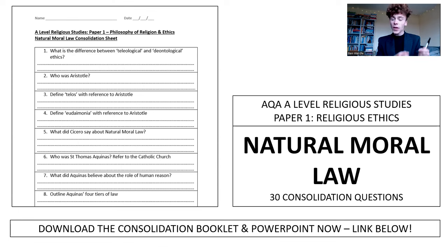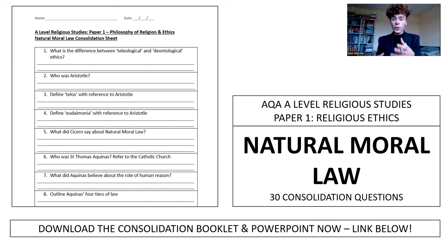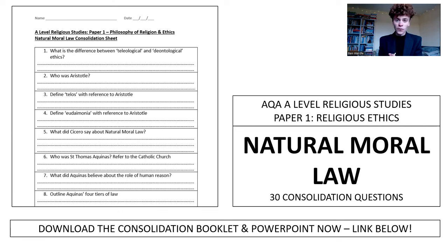We'll be starting with those ancient Greek and Stoic influences, looking at the four tiers of law, the five primary precepts, the secondary precepts, and of course the AO2 evaluation points — what different scholars have said about the strengths and weaknesses of Natural Moral Law — concluding with a look at the doctrine of double effect.